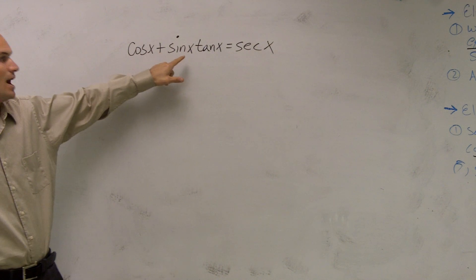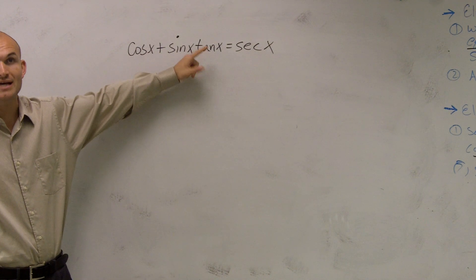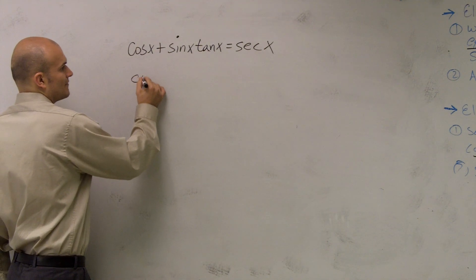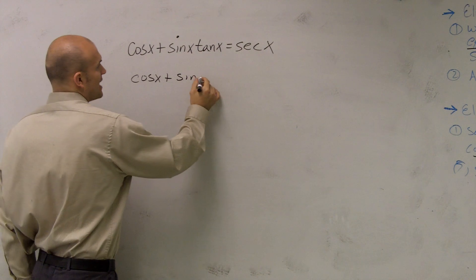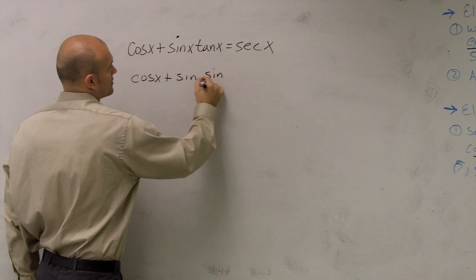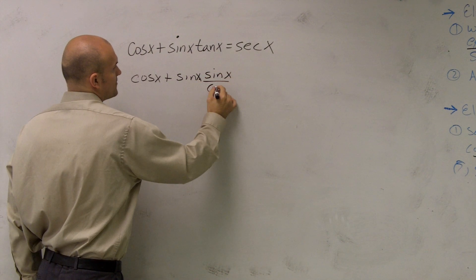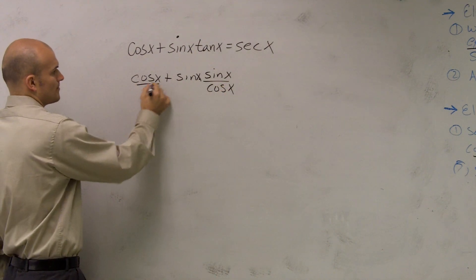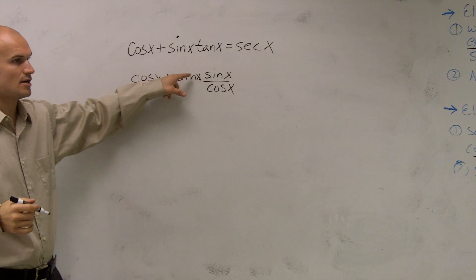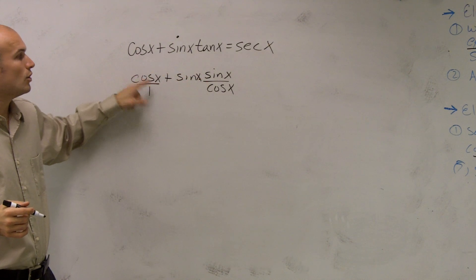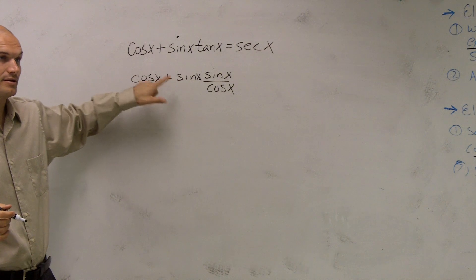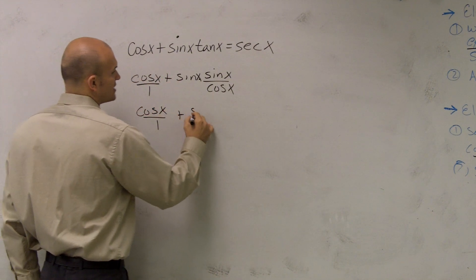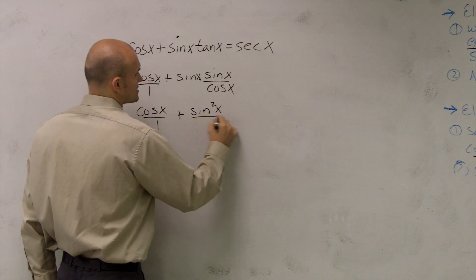What I can do is break tangent as sine over cosine — that might give me something I can work with. So I have cosine of x plus sine of x times sine of x over cosine of x. We could put a 1 under cosine of x, but these aren't going to cancel out because they're adding, not multiplying. What I end up having is cosine of x over 1 plus sine squared of x over cosine.